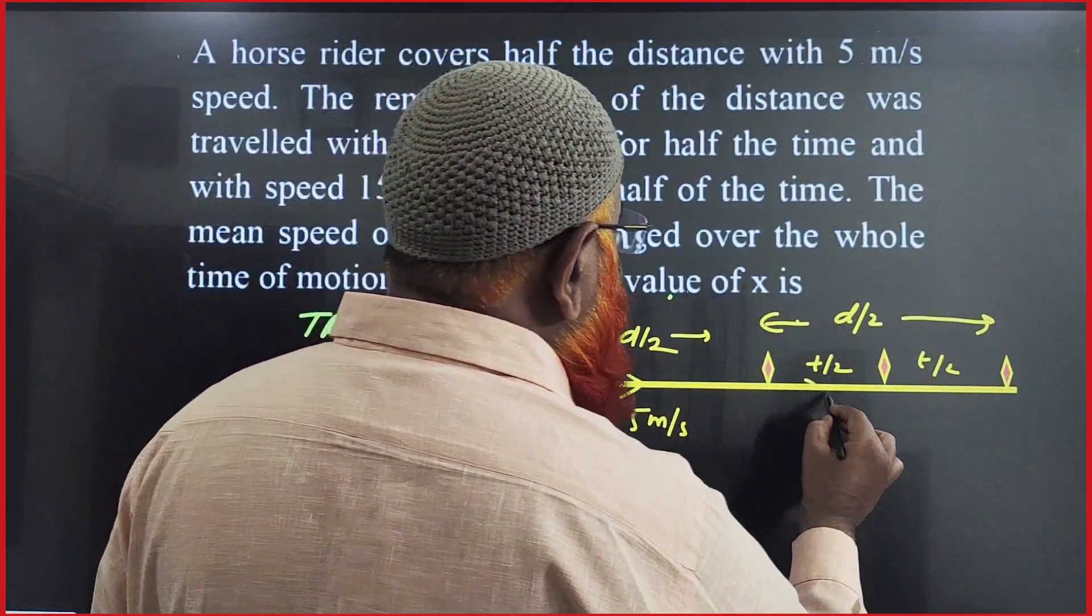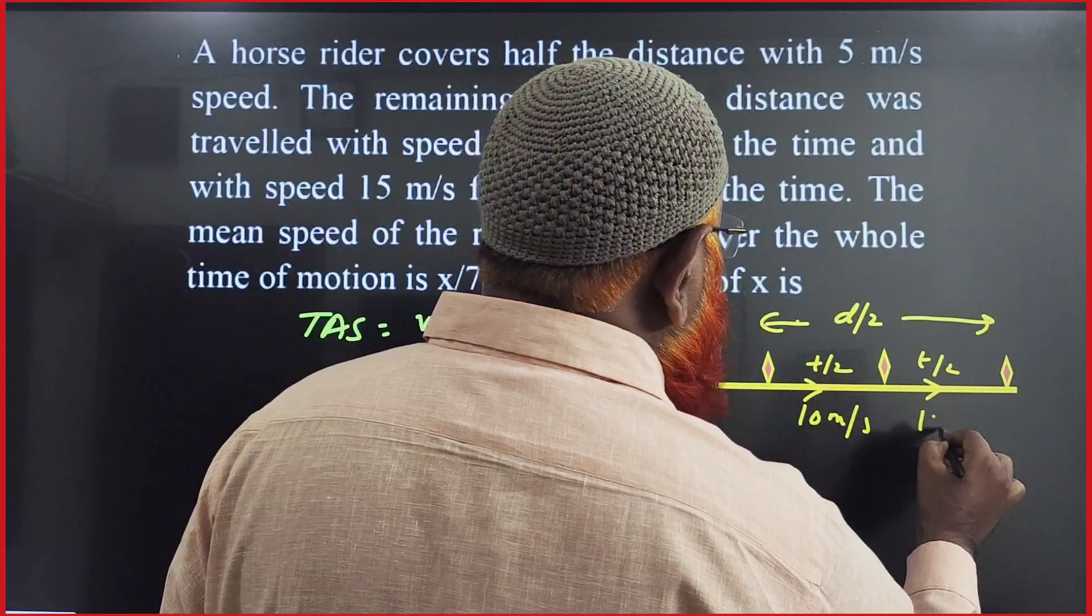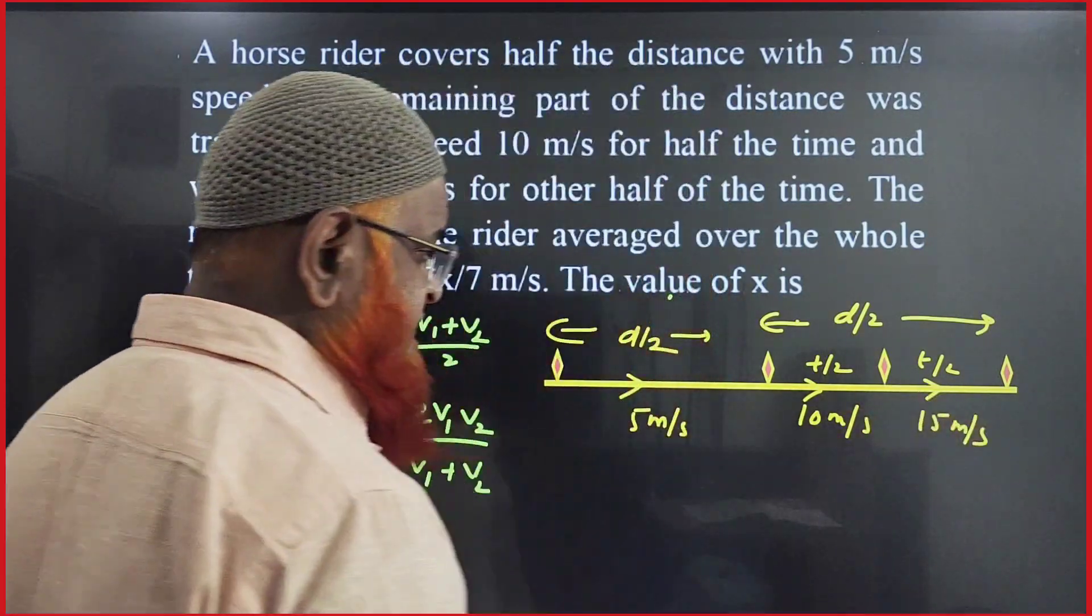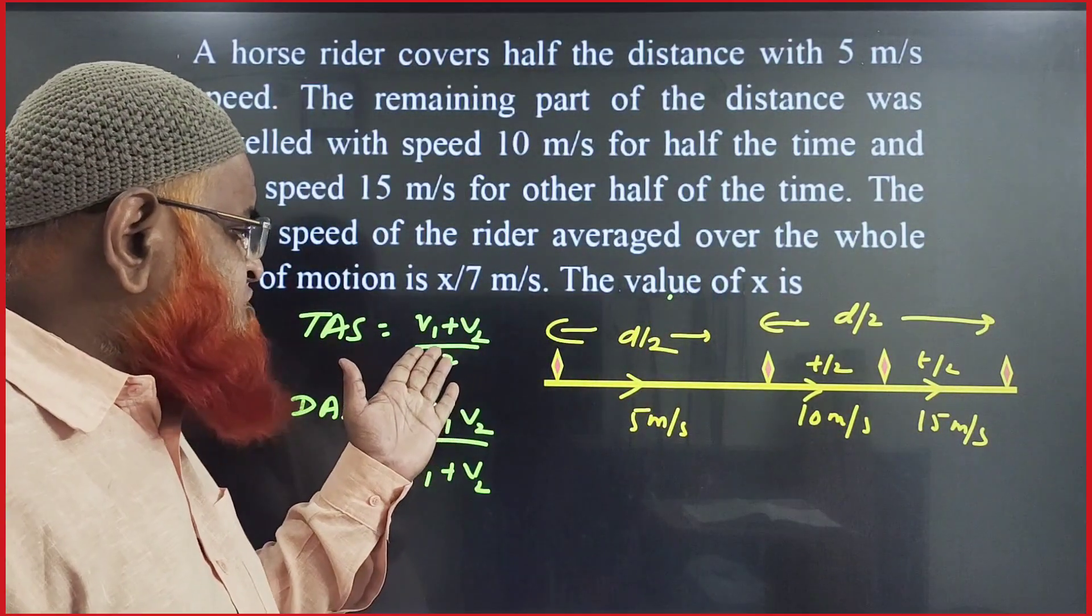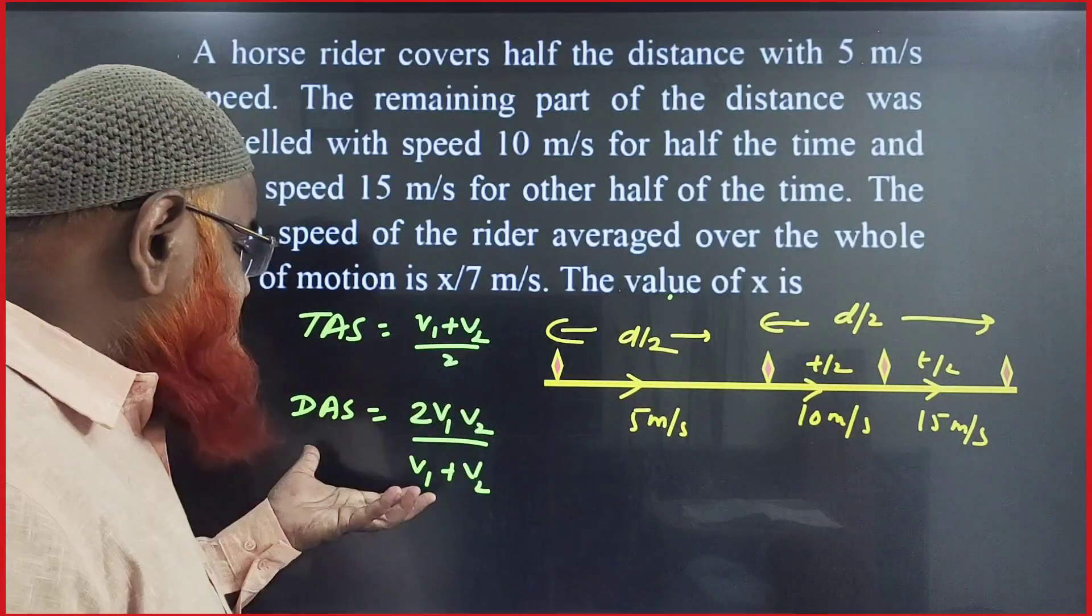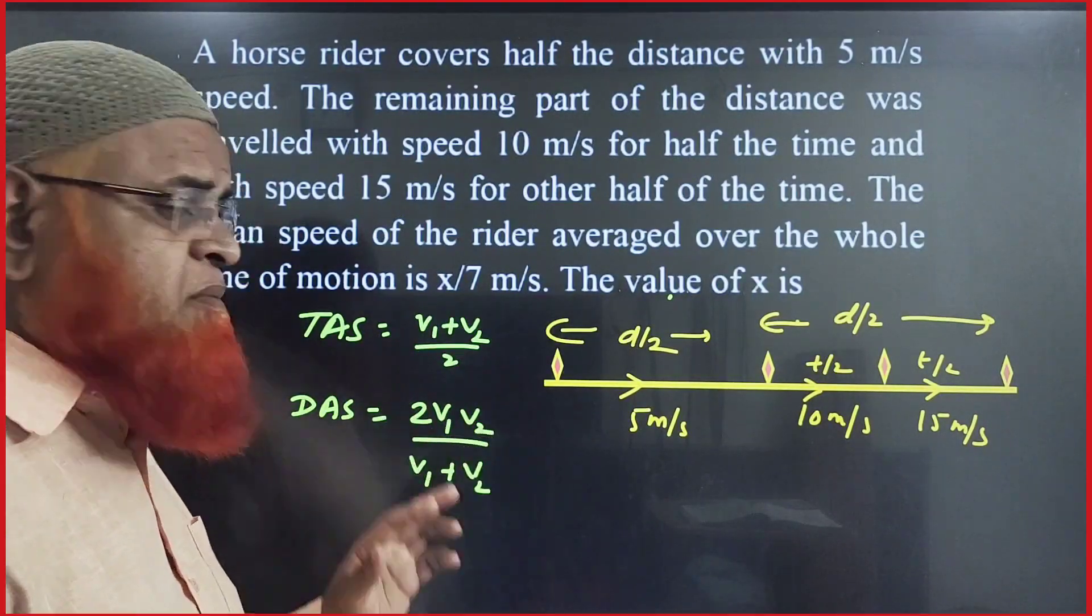The first half of the time it moves at 10 meters per second and the next half at 15 meters per second. For time average speed, the formula is (v1 + v2)/2, and for distance average speed, the formula is 2v1v2/(v1 + v2).